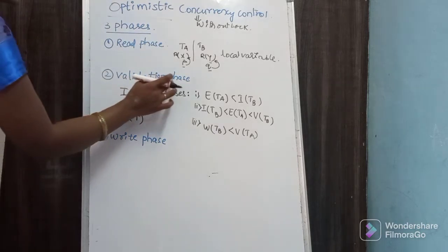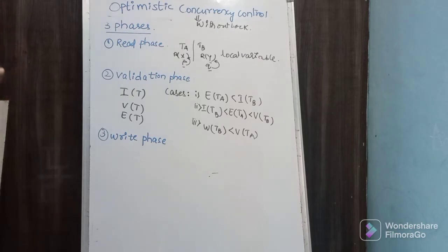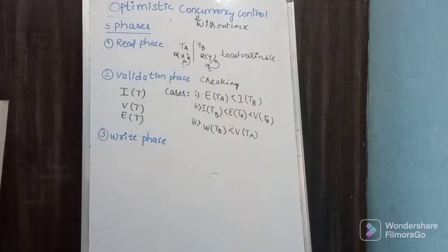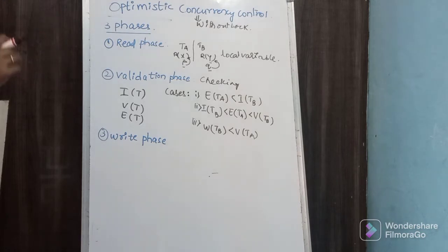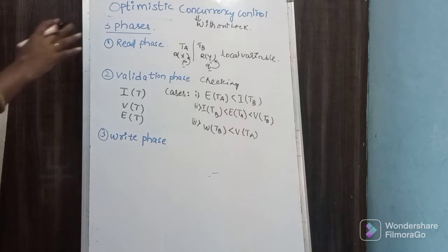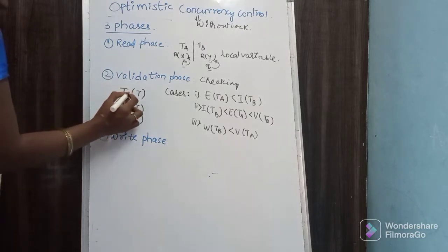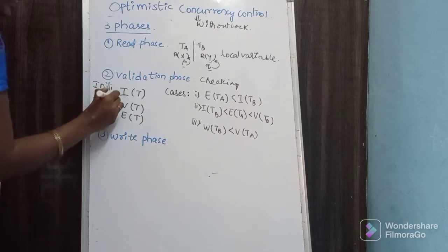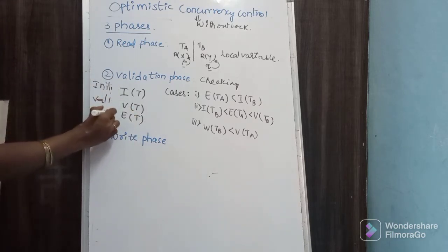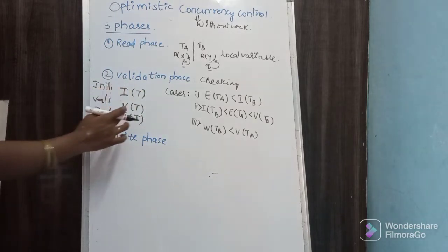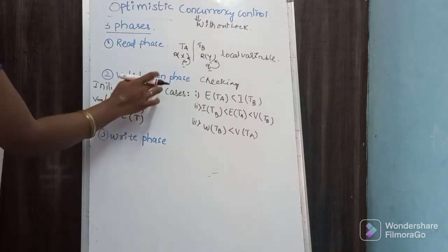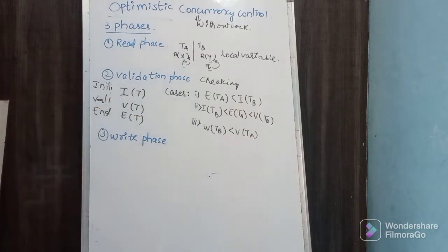The next phase is the validation phase. Validate means checking — checking whether the data is right or wrong. IT stands for Initial Transaction, VET stands for Validation, ET stands for End Transaction. So: Initial Transaction is the read phase, Validate Transaction is the validation phase, and End Transaction is the write phase.